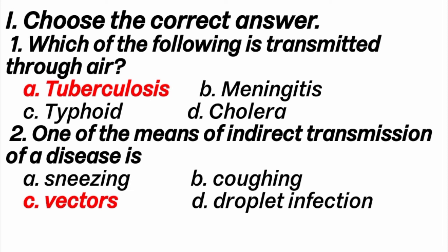2nd question: One of the means of indirect transmission of a disease is. Answer is C, Vectors. Direct transmission of diseases are sneezing, coughing, droplet infection.